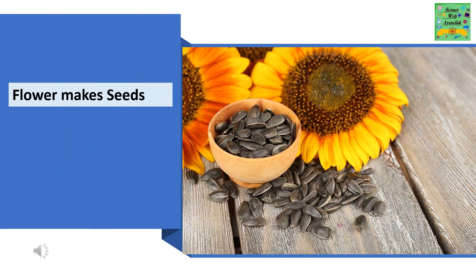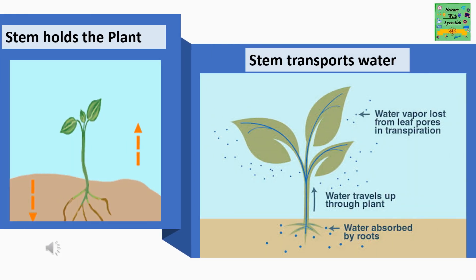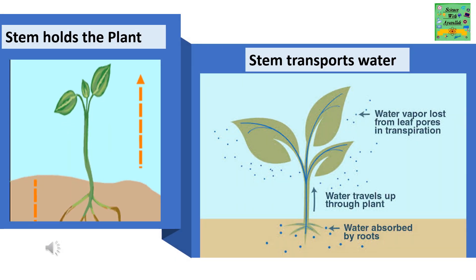Flower makes seeds. Stem holds the plant. Stem transports water. Water absorbed by roots. Water travels up through plant. Water vapor lost from leaf pores in transpiration.